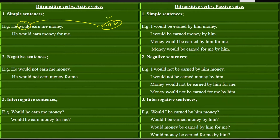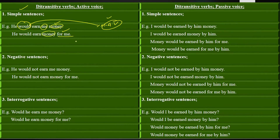For example: I say 'I would help you' for two reasons — either I did not help you because you didn't tell me, or I did not get the opportunity to help you. So for past unreal situations we use 'would.' The simple active voice sentences are: 'He would earn me money' and 'He would earn money for me' — meaning he intended to but did not get the opportunity or any cause prevented him.